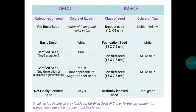In the Indian system, there are Truthfully Labeled (TFL) seeds, which do not come under the certification system — producers produce the material, check quality against IMSCS, and label it themselves; the tag color is opal green. In the OECD scheme, there is a category called 'Not Finally Certified' seeds — seed material that has fulfilled field requirements but test results are not yet received when the material is exported to another country. This material is given a gray label.